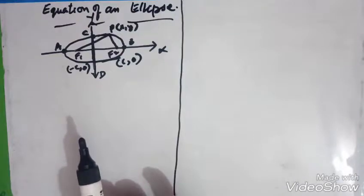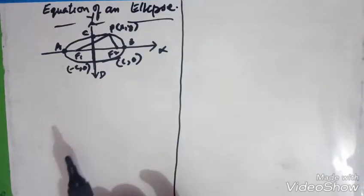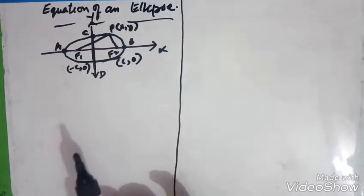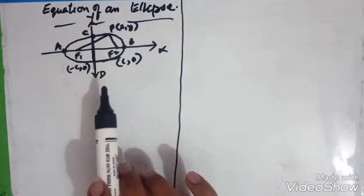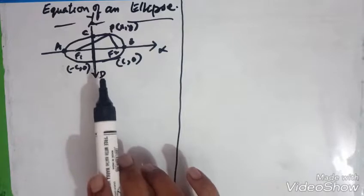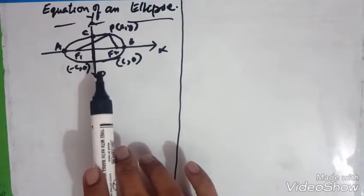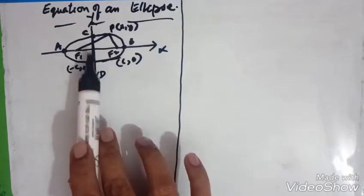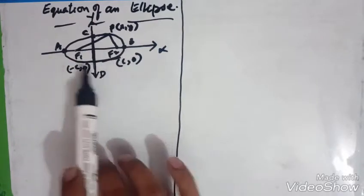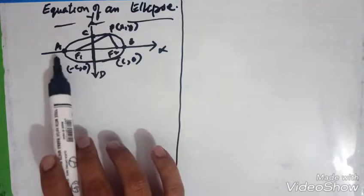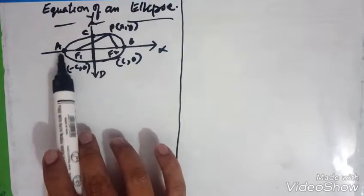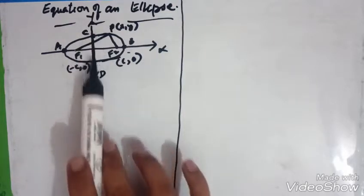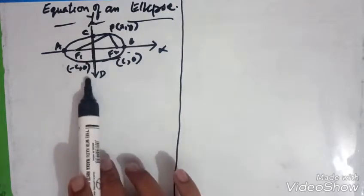Hi students, today we are going to learn about the equation of an ellipse. Let us take one ellipse on the graph which is touching the points A, B, C, D on the axis.